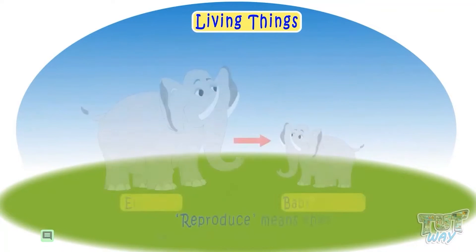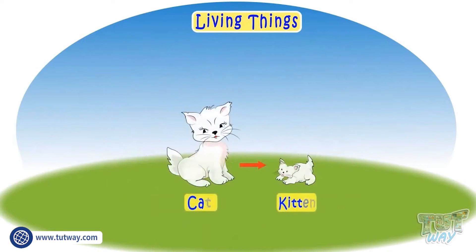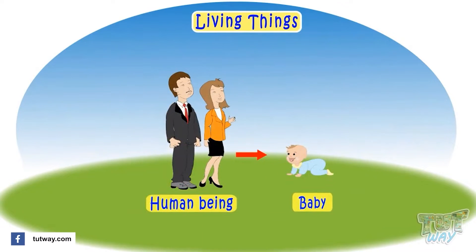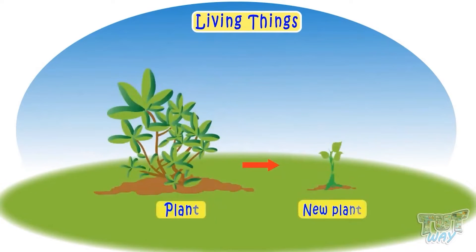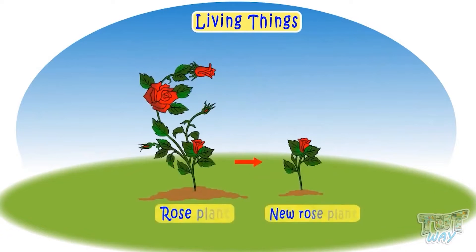Reproduce means to produce young ones of its kind. Cats give birth to small kittens. Dogs give birth to small puppies. Humans give birth to small babies. Plants, too, reproduce plants of their own kind — like a seed of a mango tree will produce a mango tree, and a seed of a rose flower plant will produce a new rose flower plant.